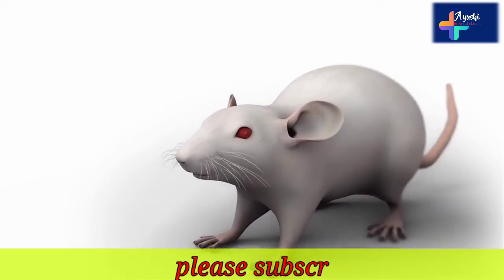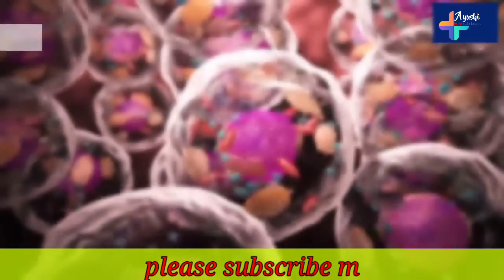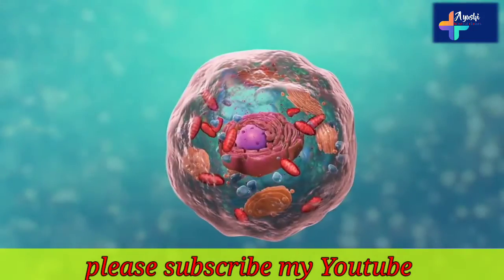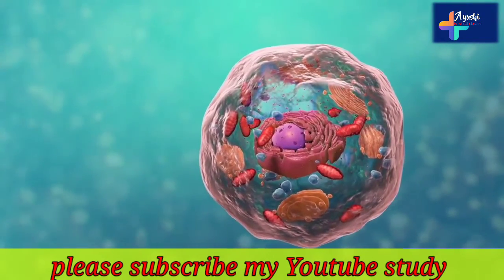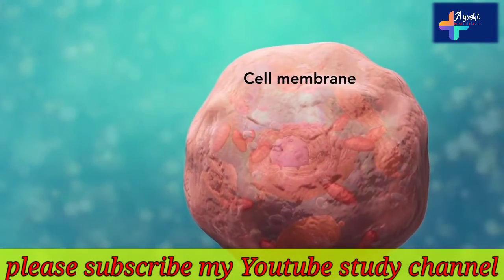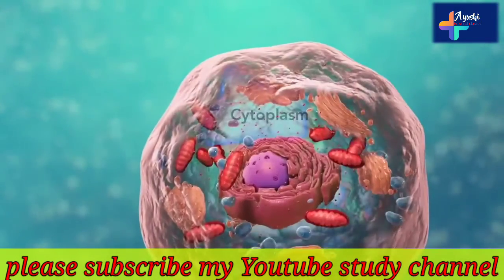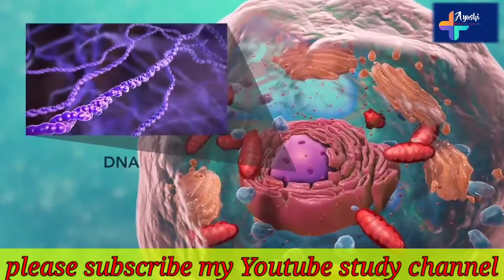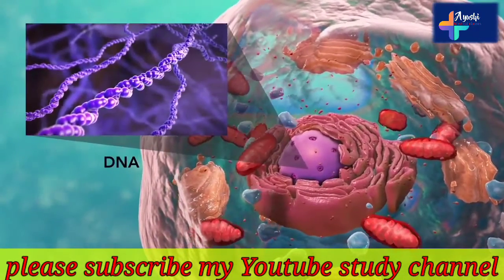Cells are the smallest living units of an organism. All cells have three things in common no matter what type of cell they are. All cells have a cell membrane which separates the inside of the cell from its environment, cytoplasm which is a jelly-like fluid, and DNA which is the cell's genetic material.